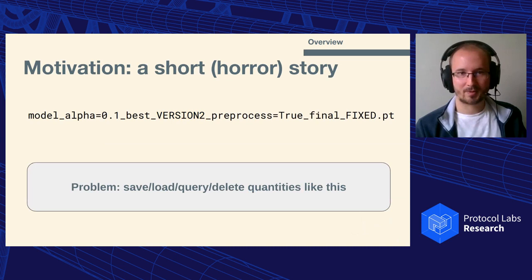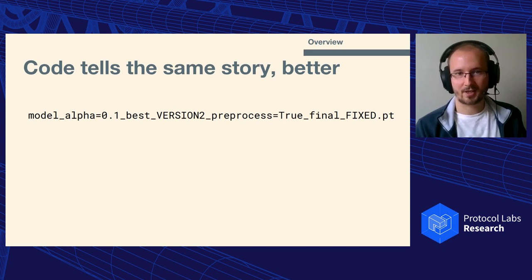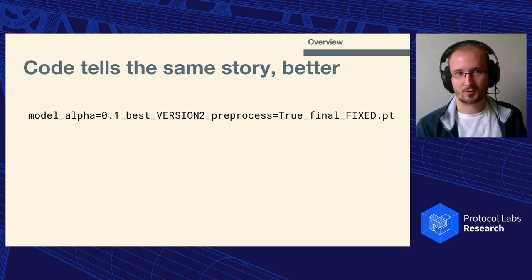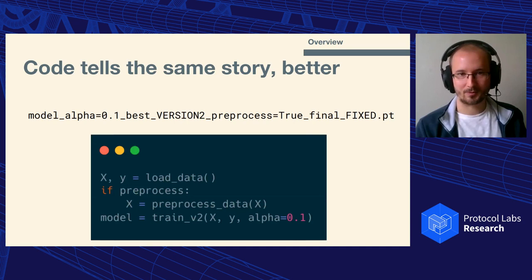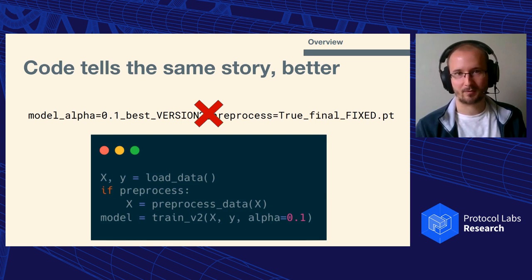This is, in some sense, maybe the worst of data management. The problem of scientific data management is to deal with things like this — save, load, query, delete, and otherwise organize quantities of this sort. This naive file name is probably one of the worst approaches to data management. The starting observation for this whole project is that there is actually something else that tells the story of how this file came to be: namely the code that you use to generate the contents of this file. I'm going to argue that this code is in many ways a better telling of the story, and where we're going is that we're going to replace this file name as a way to refer to the file's contents by the code itself.